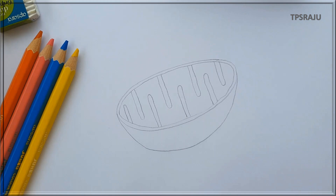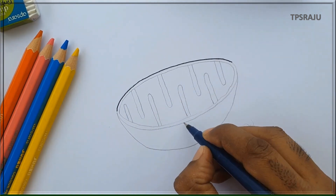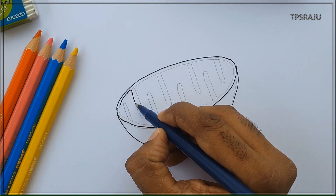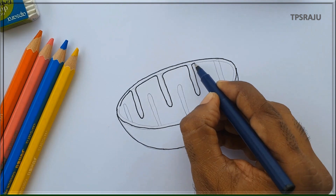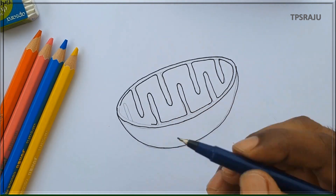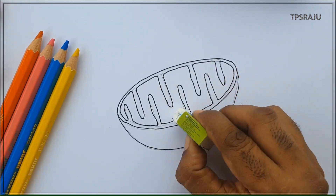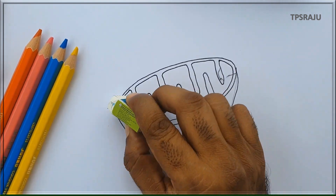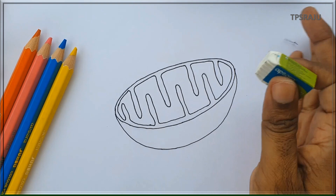Now the diagram is completed. For better appearance, again draw the diagram with a black pen. If we apply the colors, it will become more beautiful. Let us apply the colors.